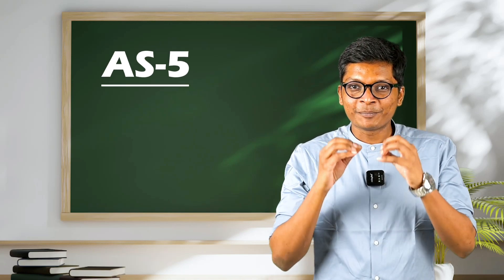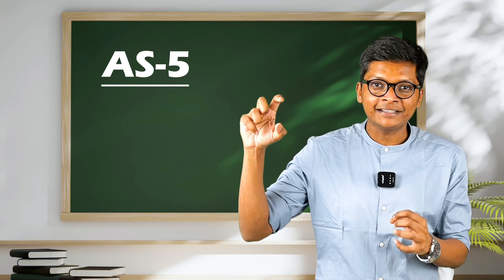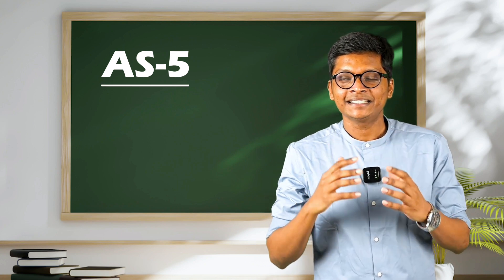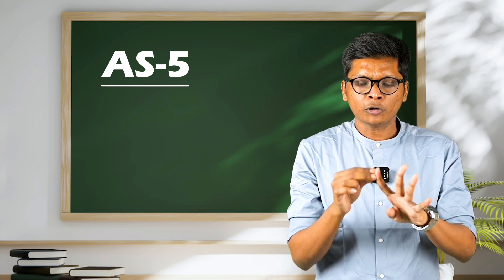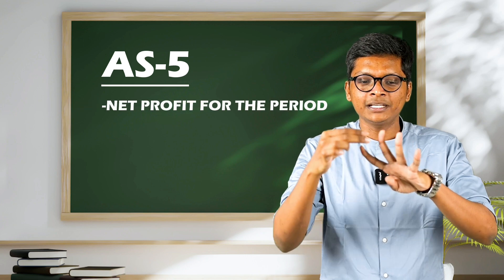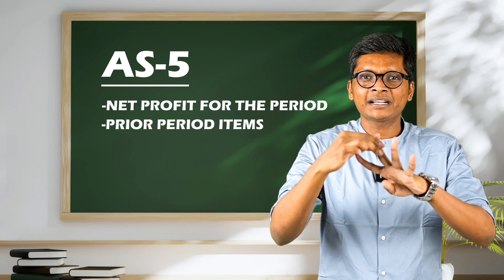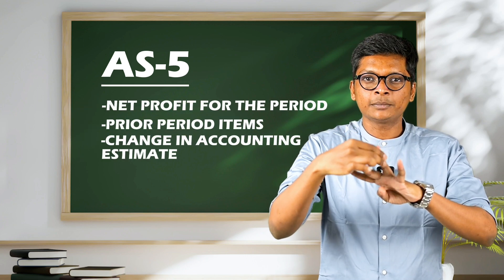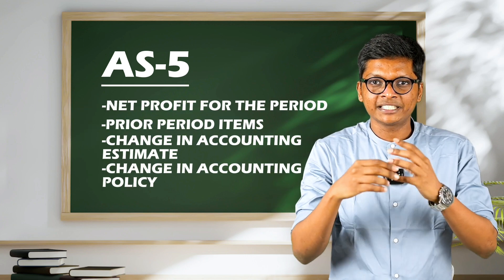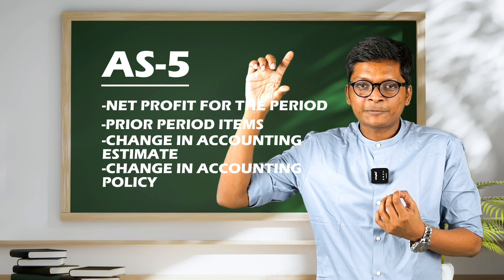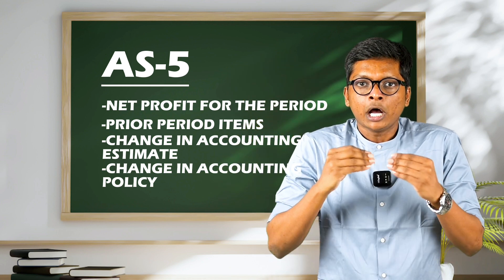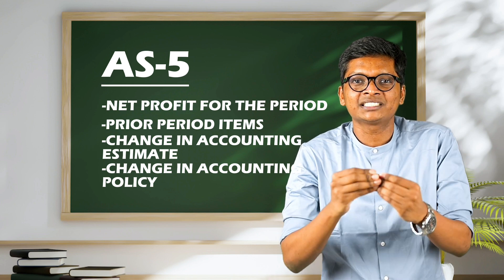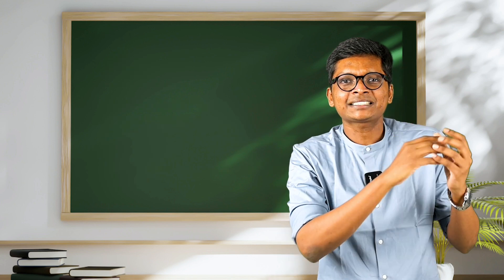Let's quickly revise AS5. This is the biggest standard in terms of standard name, but the contents are very easy. This standard has four separate concepts: net profit for the period, prior period items, change in accounting estimate, and change in accounting policy. The standard explains each of these concepts separately and how you should disclose them in the financial statements. Let's go in reverse order.